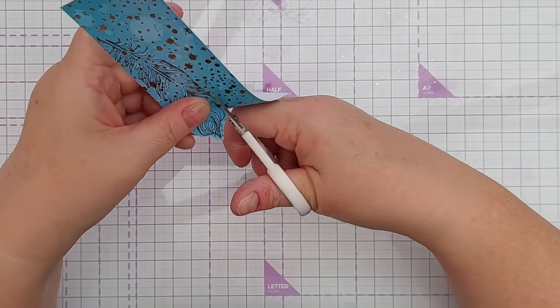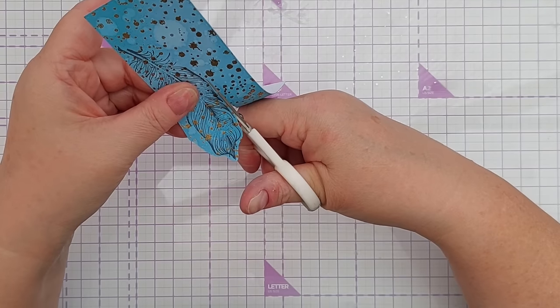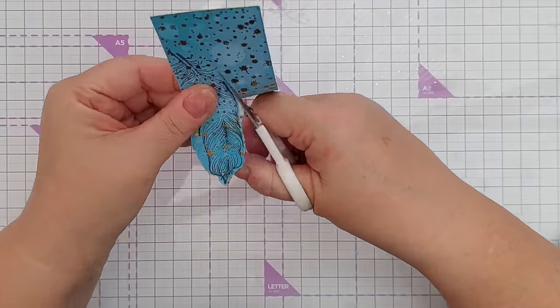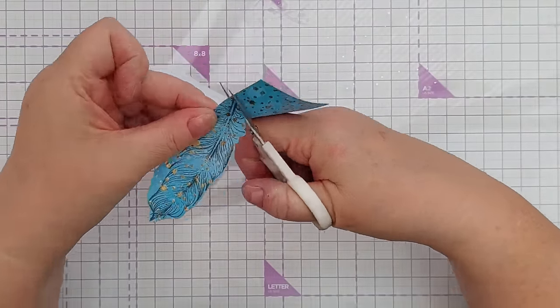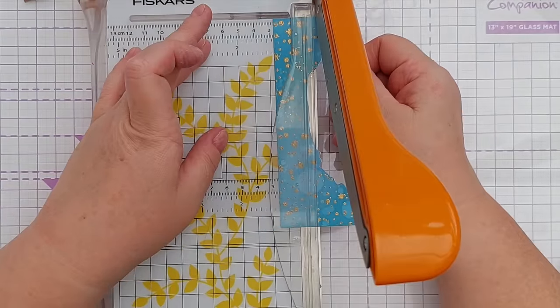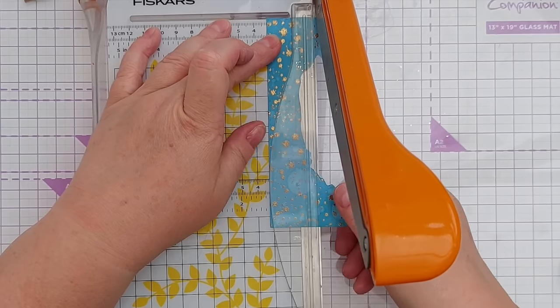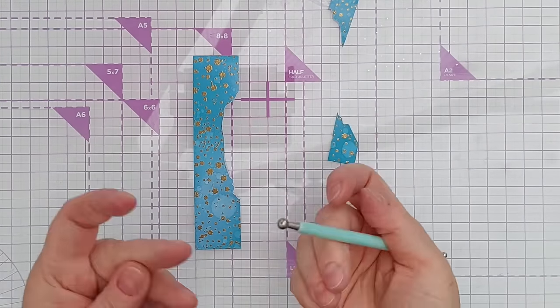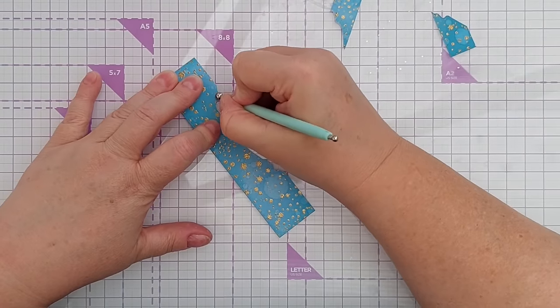And what you're after is not the feather, although you could obviously keep that and use that—you're after the other bit. And what did we do that last one at? We did one and a quarter, didn't we? So we'll do that again, one and a quarter.